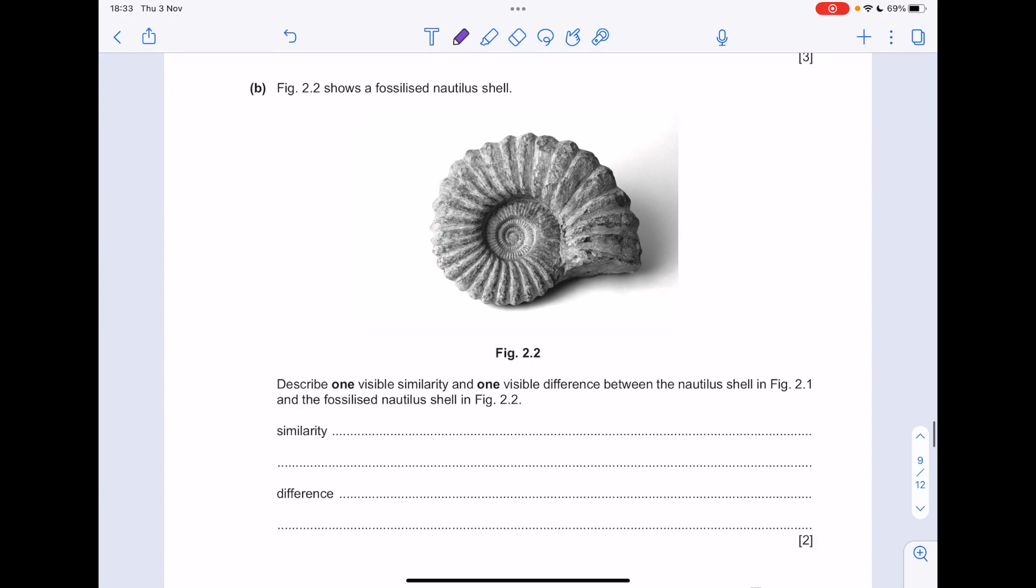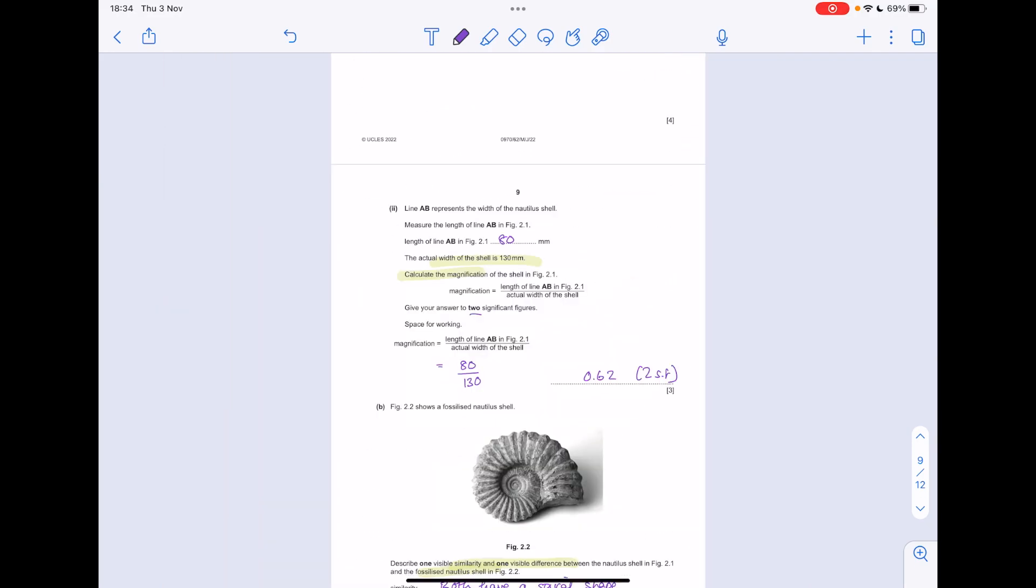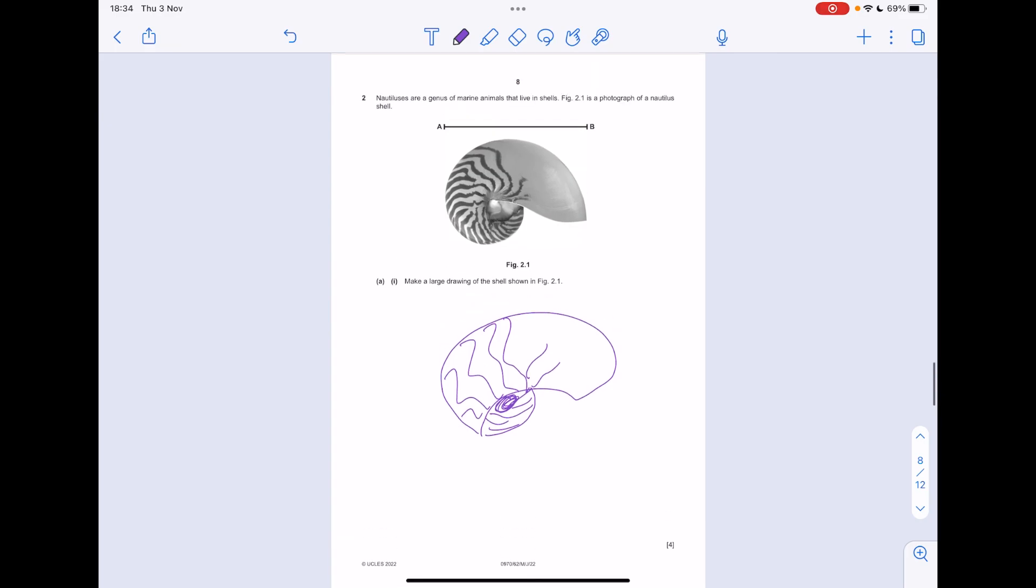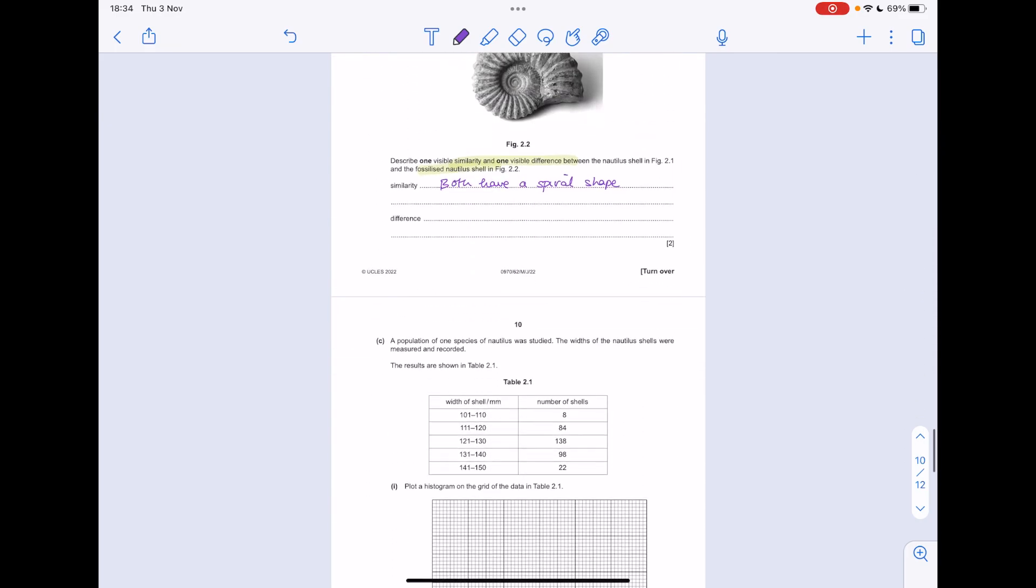Figure 2.2 shows a fossilized nautilus shell. Describe one visible similarity and one visible difference between the nautilus shell shown in figure 2.1 and the fossilized one. The similarity is that they both have a spiral shape. What's the major difference? It's a say-what-you-see really. The picture above shows a smooth nautilus shell, whereas the fossil shows it much rougher.